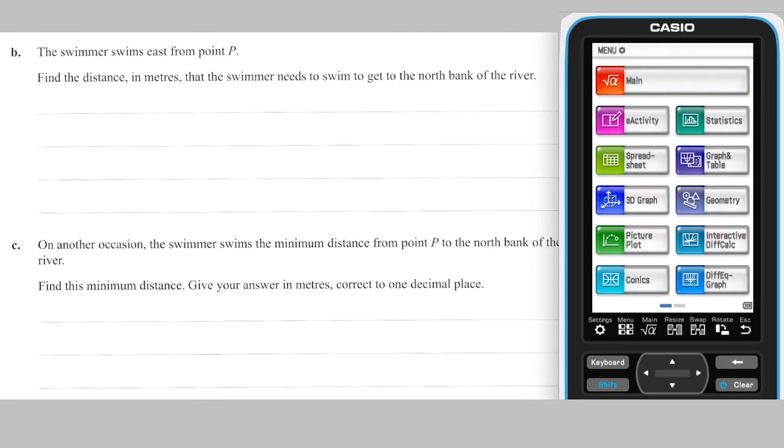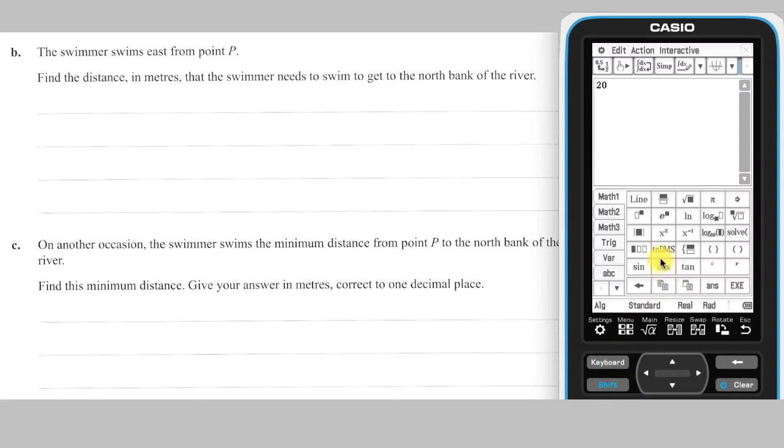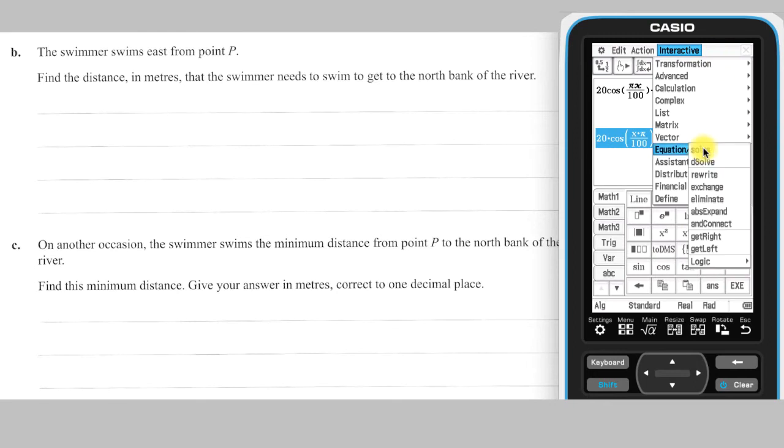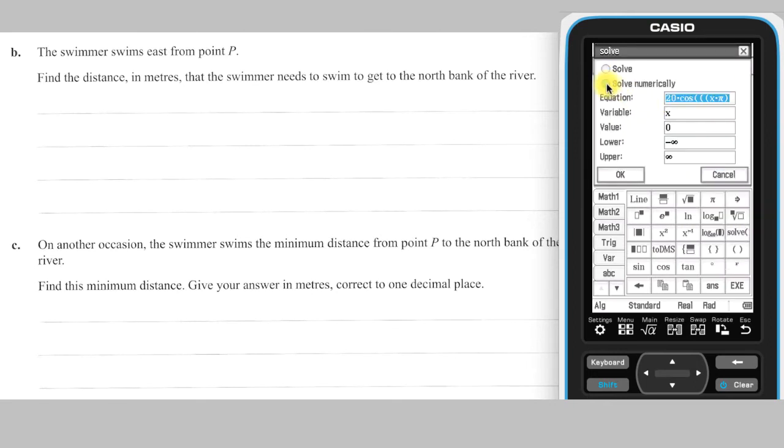Part B. The easterly distance from P to the northern bank can be found by calculating the x-coordinate of the point on the northern bank where y equals 30 and then subtracting 50 from it. The necessary x-coordinate can be found by solving f1 of x equals 30, which I will do on my ClassPad. The only solutions I am interested in are those between 0 and 100.